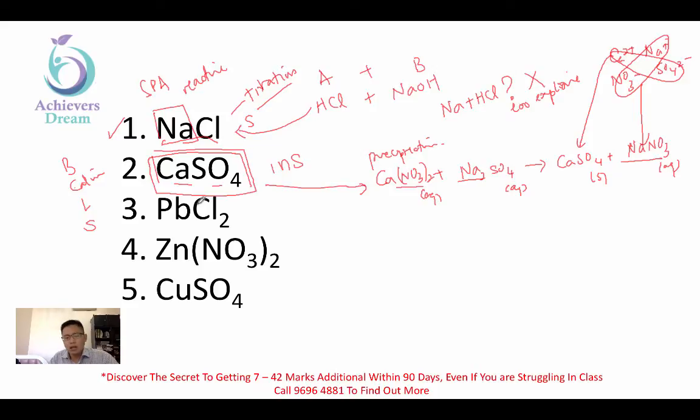Number three. Once again, it is a precipitation reaction. Let me show you. PbCl2. Since it is precipitation reaction, it is insoluble salt. We use precipitation. It is soluble plus soluble. Give you insoluble plus soluble. What is soluble? PbCl2 plus something. So, the safest bet is always to use nitrate. So, we use nitrate. The next thing we can do is either sodium or potassium. We can use either one of them. So, it is Pb(NO3)2 plus KCl. This is how you prepare this salt. This is for example three.